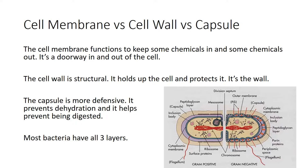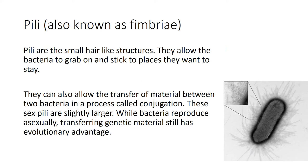The cell membrane is mainly about keeping chemicals in or out in either direction. The cell wall holds up and provides structural protection. The capsule prevents dehydration and digestion. There are also two different types of bacteria called gram-positive and gram-negative, based on how they respond to a stain due to slightly different chemicals on their outsides. The pili are also known as fimbriae — the terms are used interchangeably, though most people say pili.